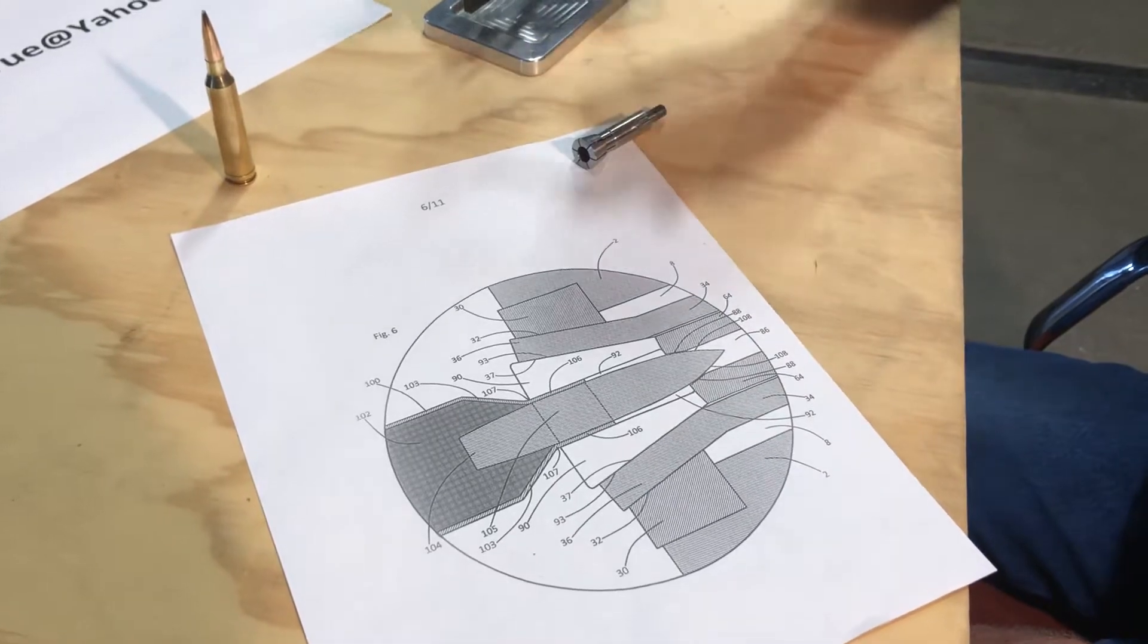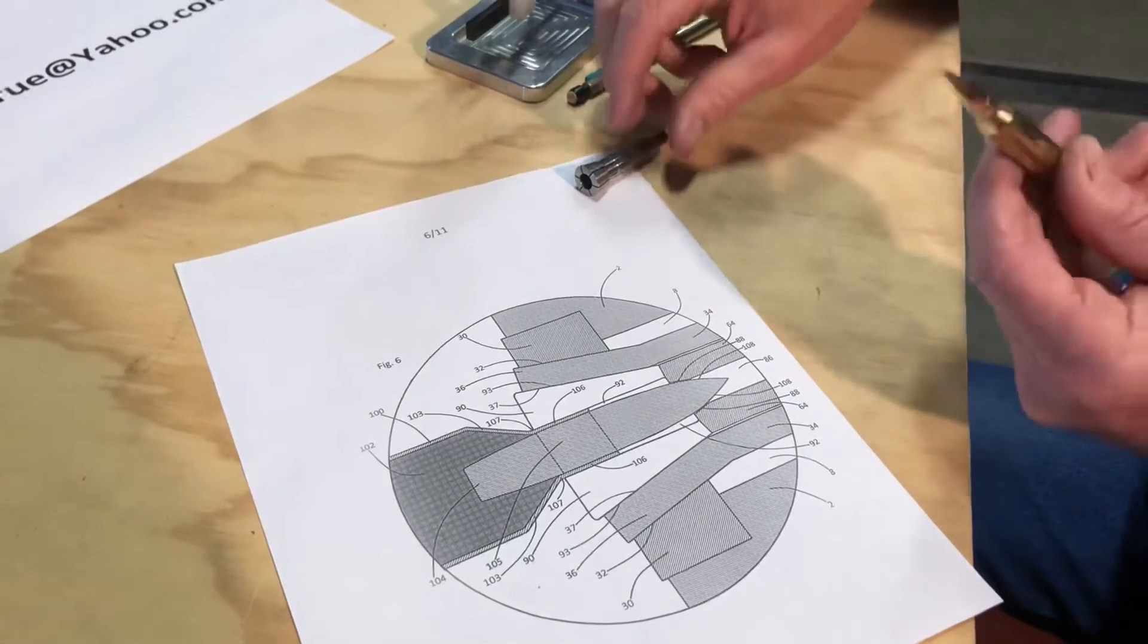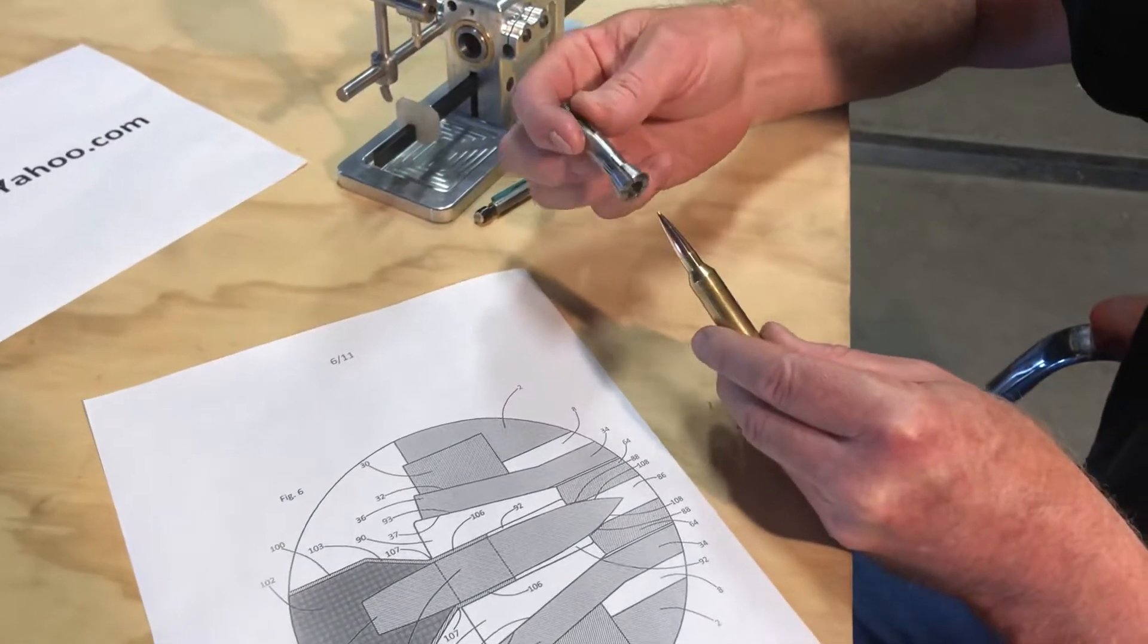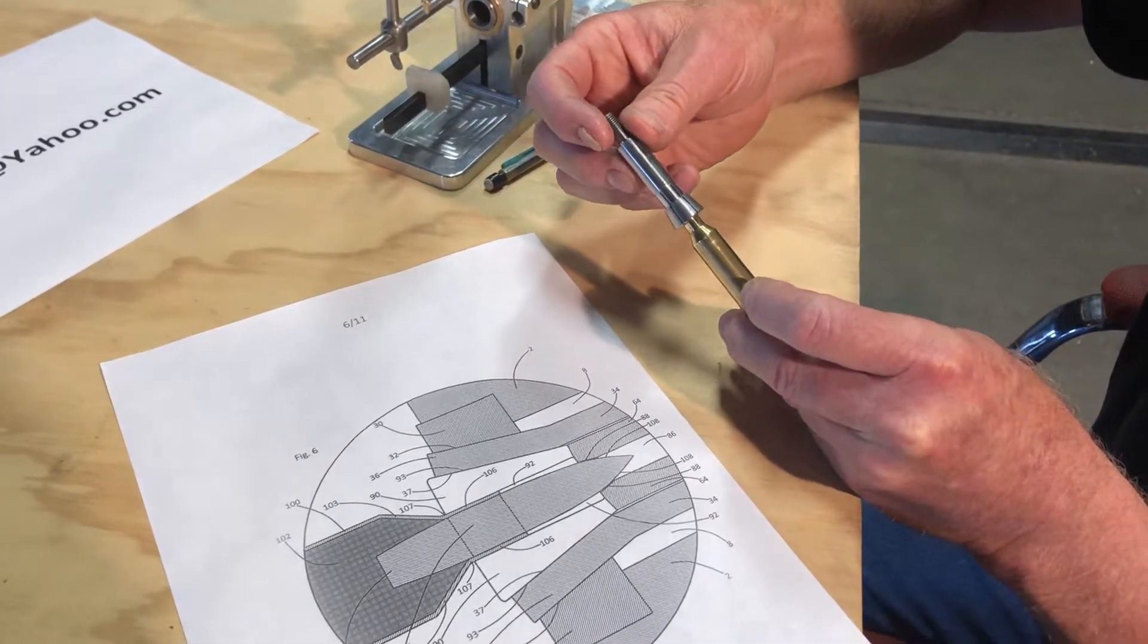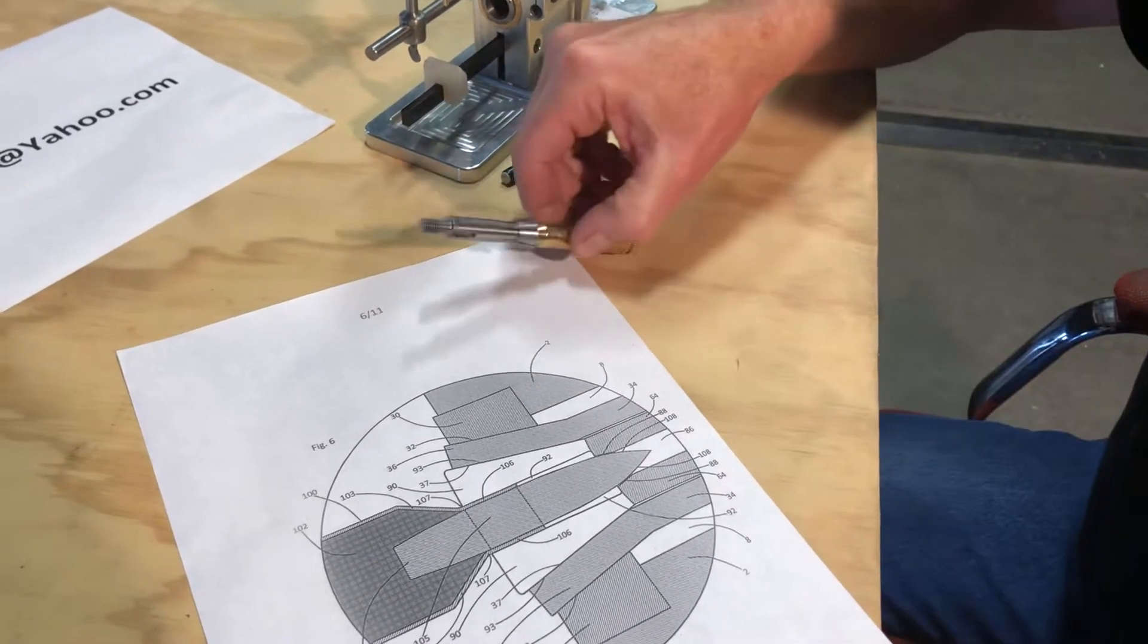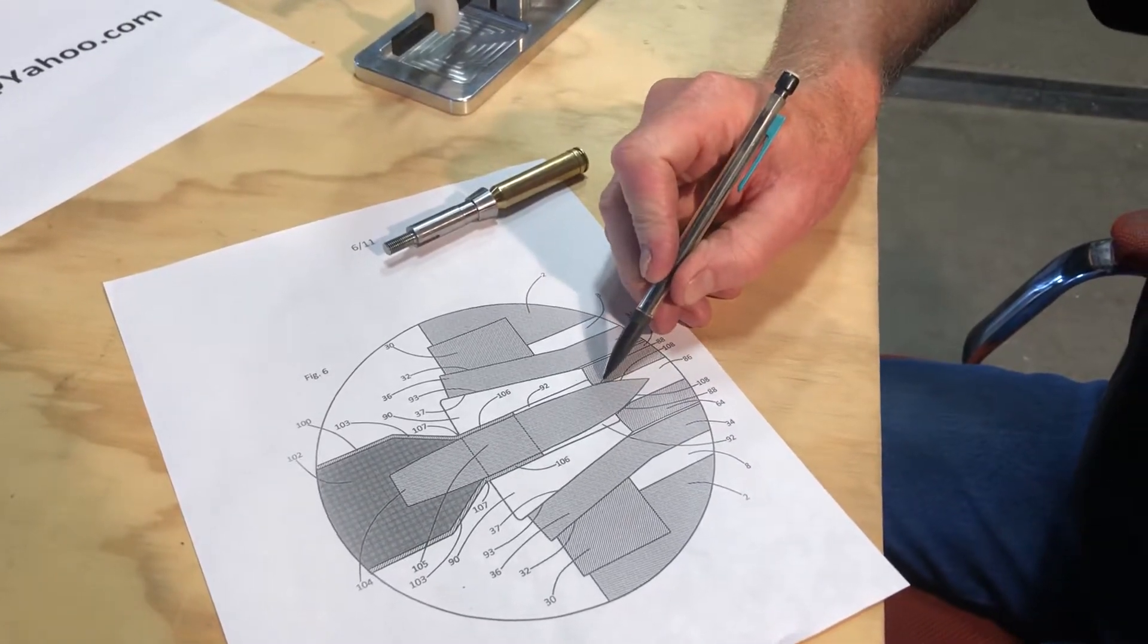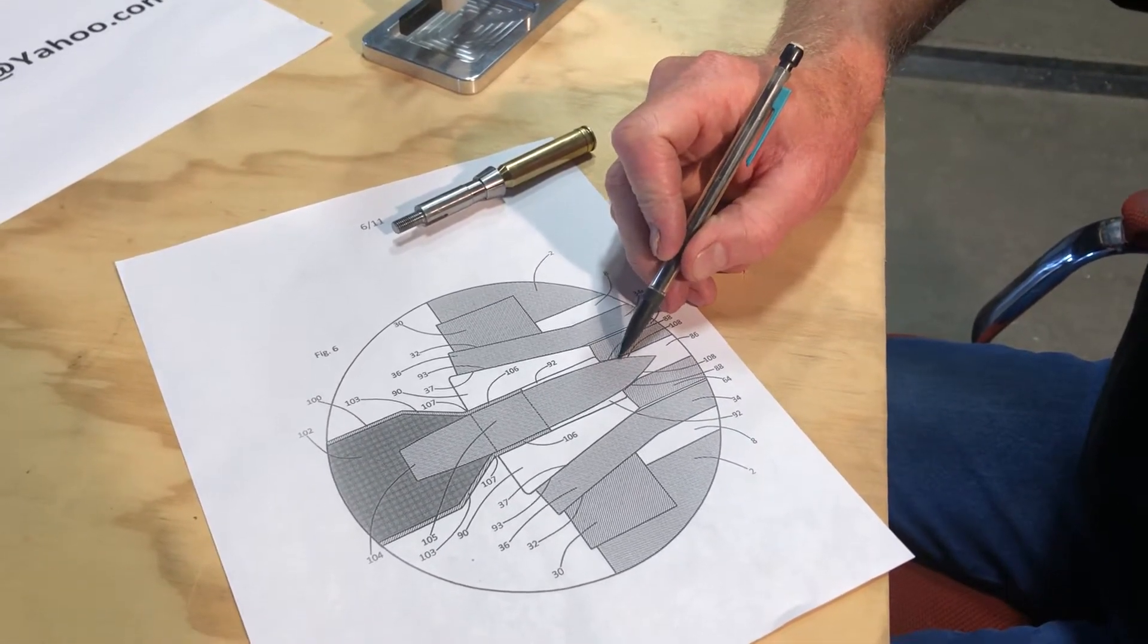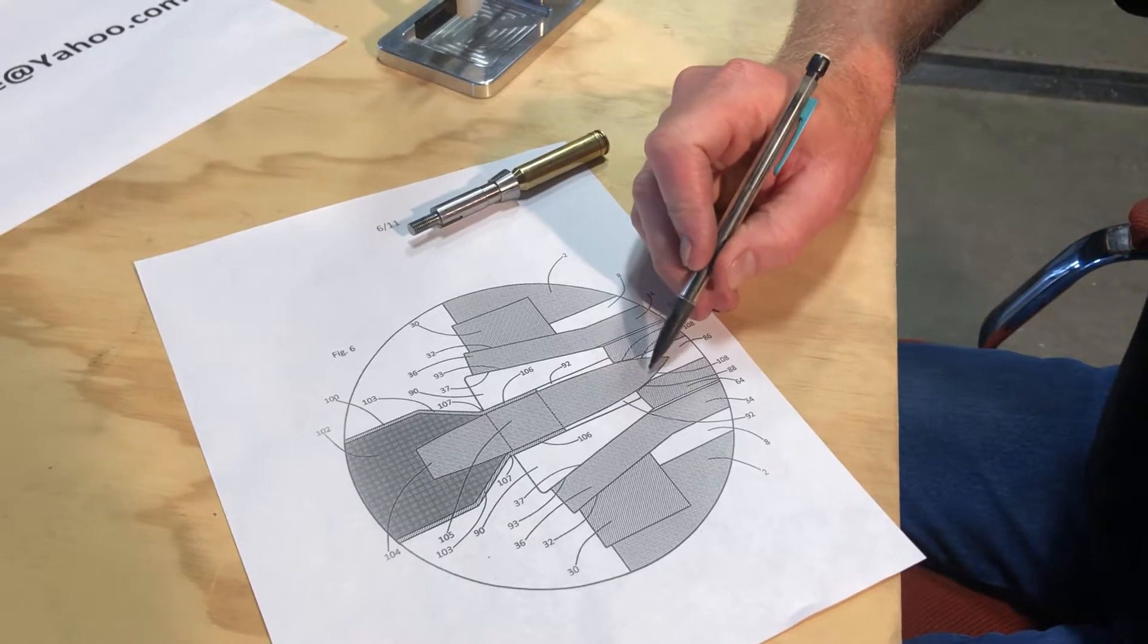When you load your loaded cartridge into the collet, what happens is the ojive of the bullet is centered up here in the collet.